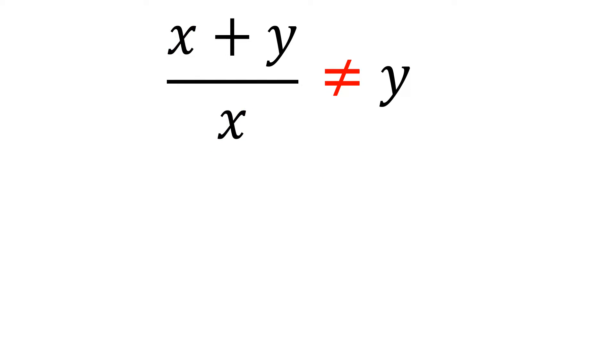let's say x is 2 and y is 4. So we have 2 plus 4 over 2 equals 4. 2 plus 4 is 6, so we have 6 over 2, and 6 over 2 is 3. And 3 is not equal to 4. So therefore, we see why cancelling x here is not correct.